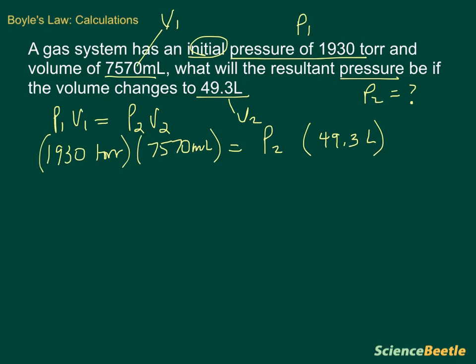And what we want to do is we want to get P2 by itself. So in order for us to do that, we need to divide by 49.3 liters. That cancels here, giving us this entire amount as 49.3 liters. Now, if you look at this carefully, what you're going to find is that we have a little bit of a dilemma.